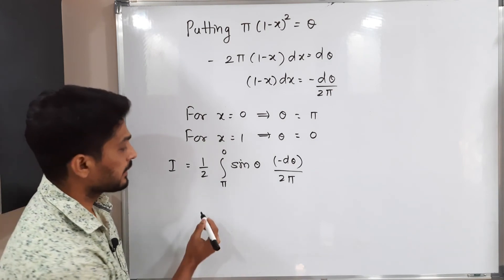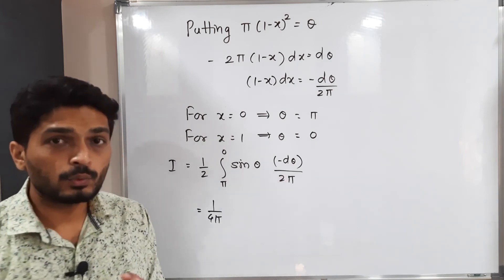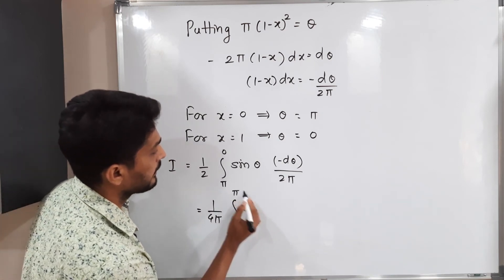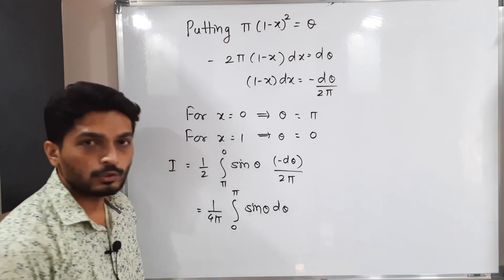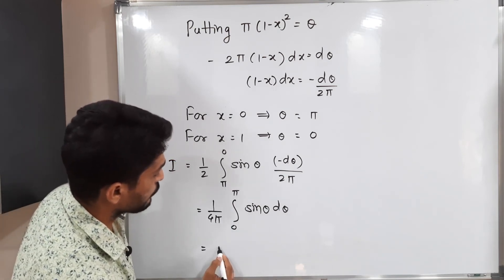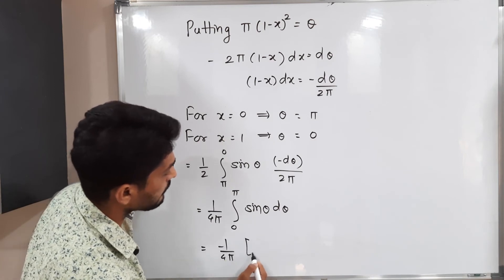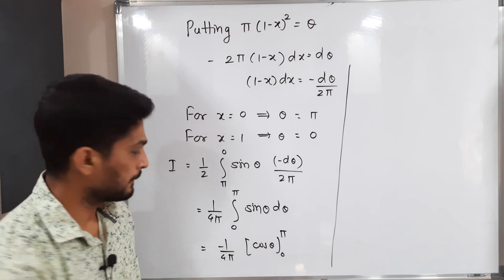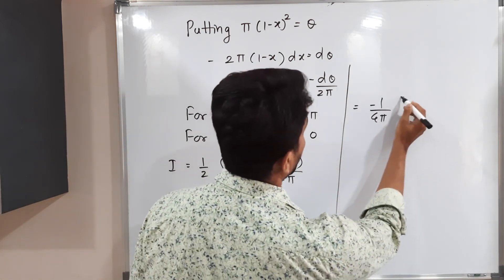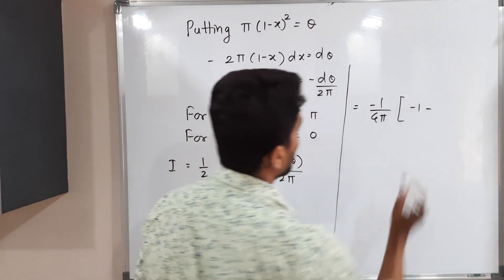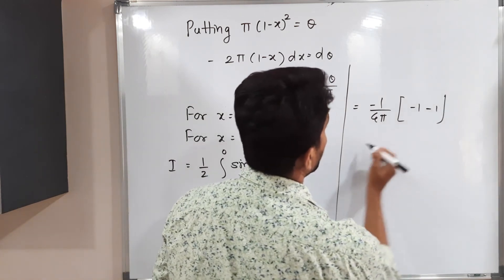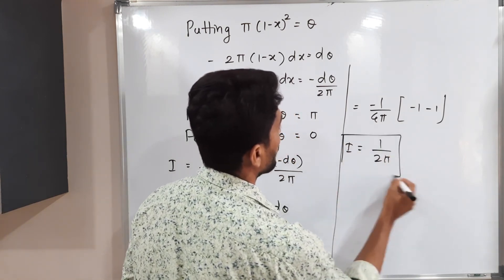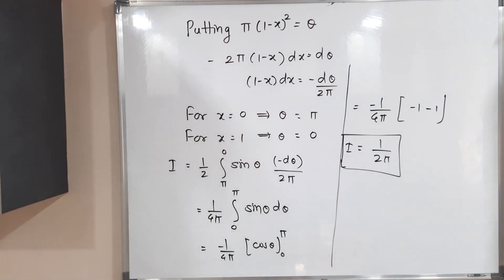The integral of sin(θ) is −cos(θ), so we take the minus sign outside: I = −(1/(4π)) [cos(θ)]₀^π. Putting in the limits: cos(π) = −1 and cos(0) = 1, giving −(1/(4π))(−1 − 1) = −(1/(4π))(−2) = 2/(4π) = 1/(2π). Therefore the required value of the integration is I = 1/(2π).